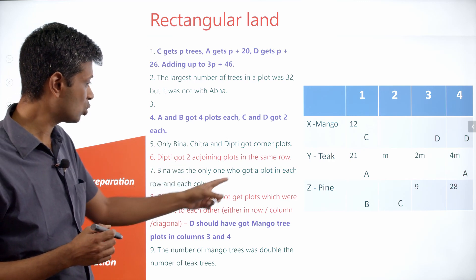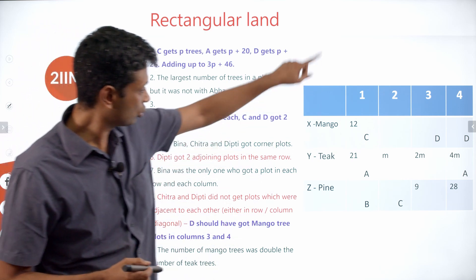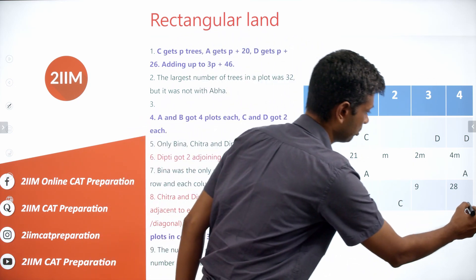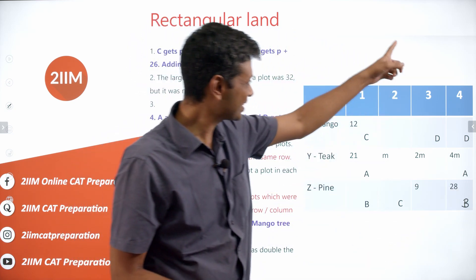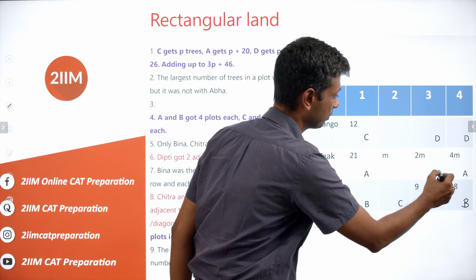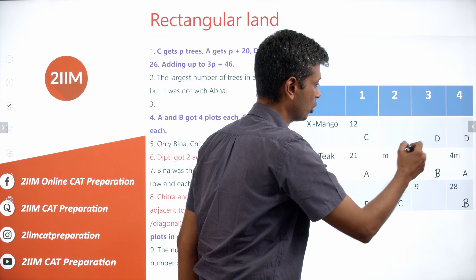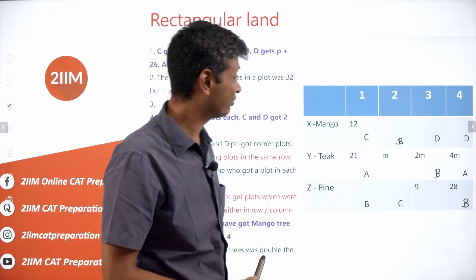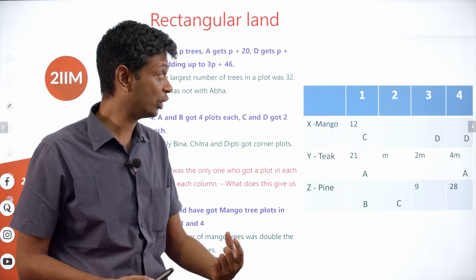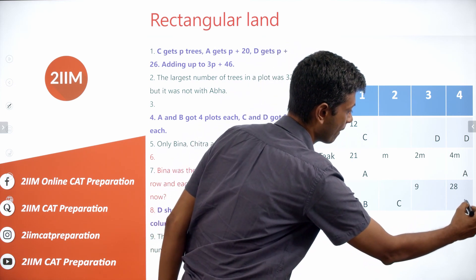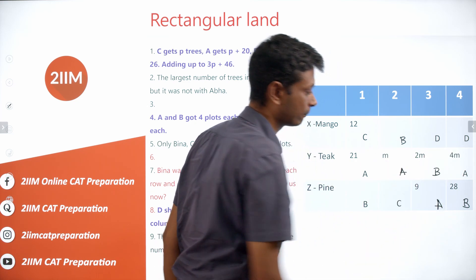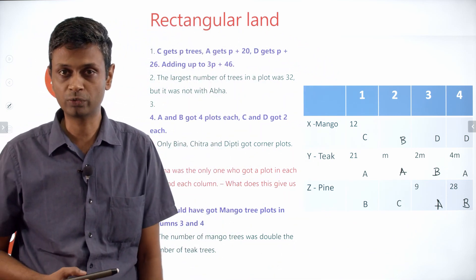We can fill in Deepti's two plots immediately. Now for Bina — the only one with a plot in each row and each column. In each column there must be exactly one Bina plot. Working through the columns and rows, Bina's positions are forced. Once Bina is placed, the remaining cells fill in: D has two, C has two, and A gets four. The person-name grid is practically complete.